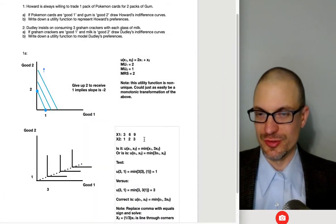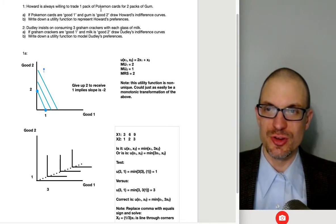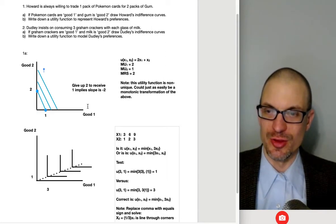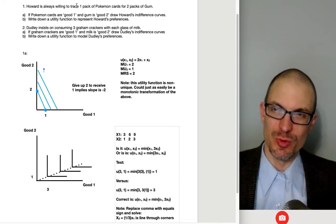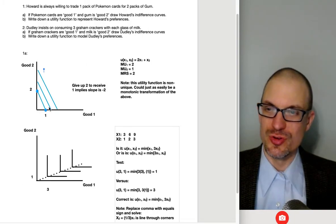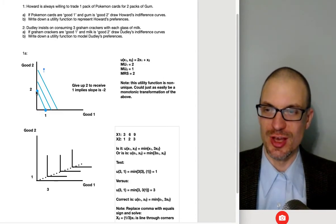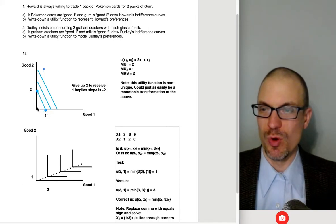Yeah, this stuff is moving around. Anyway, so the first one, Howard is willing to trade one pack of Pokemon cards for two packs of gum. I put gum on the vertical. I put Pokemon cards on the horizontal. Good one and good two. And actually like what this is saying, willing to trade one for two. I'm starting down here where I have one and I'm willing to give up the one that I have. Now I've got zero and I'm given two packs of gum and I'm just as good, right? So that's the idea. You're always willing to trade one for two.